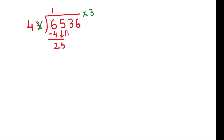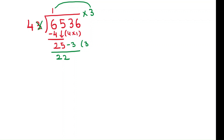So this is 4 times 1. Now you have to work with 3 — the last digit of the divisor — using the last digit of the quotient, which is 1. 3 times 1 is 3. 25 minus 3 is 22. This step uses 3 times 1.